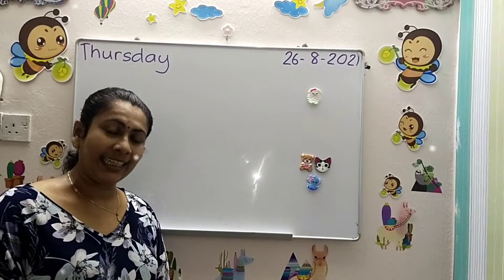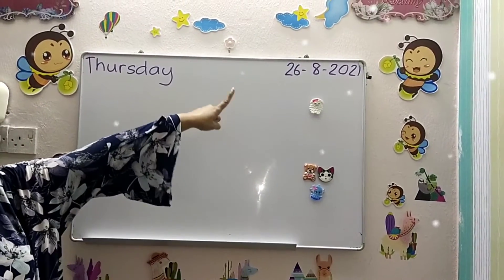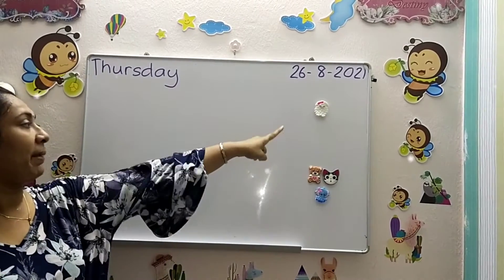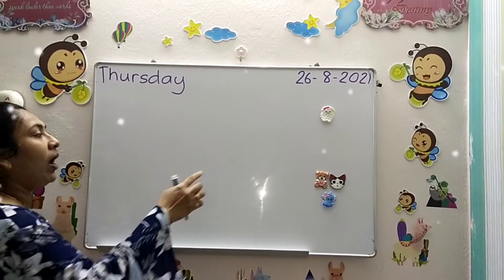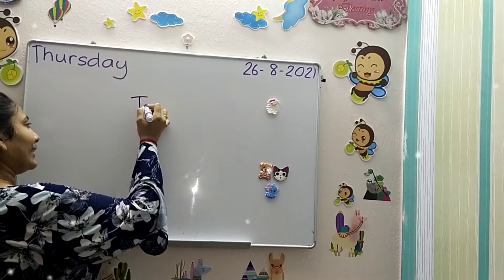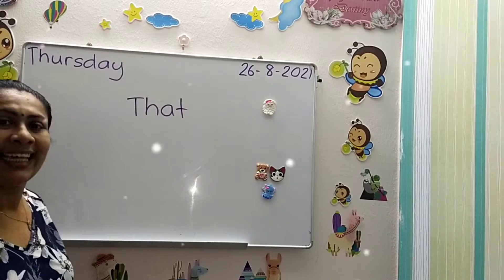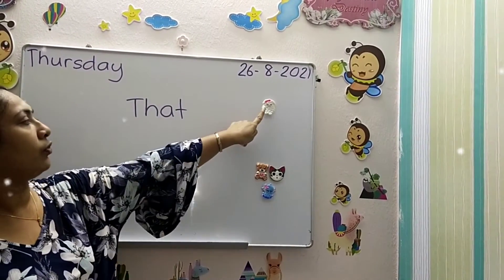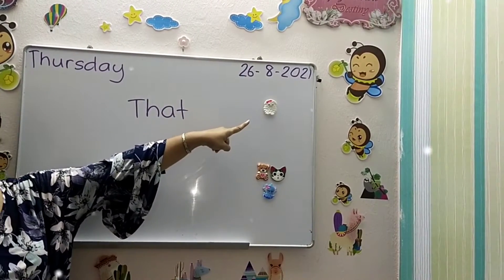Now let's see the demonstrative nouns for things that are far. Far means something that Teacher Shyam is not able to touch — like the magnet there, I can't touch it, it's far. So for one magnet, I use the word 'that' — T-H-A-T. 'That' is used for one thing that is far.